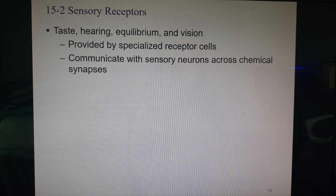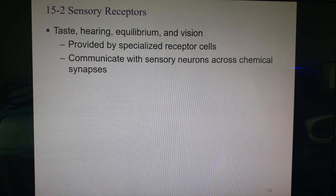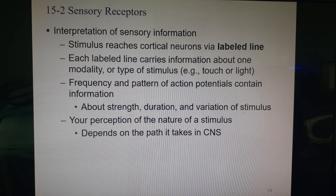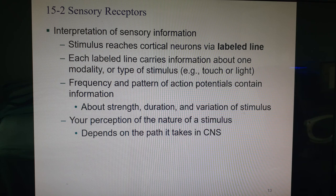When information arrives in the brain it consists of action potentials, so it reaches cortical neurons through a particular path called a labeled line. Each labeled line carries information about one modality or type of stimulus — pressure comes up one labeled line, vibration up another, light through a completely different one. Where it's coming from and the path it takes already tells your brain something about what's going on.